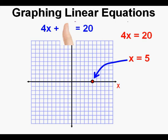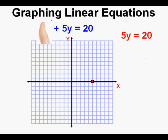Now we find the y-intercept by covering up the x-term, which sets x equal to 0. That gives us 5y equals 20. We solve for the y-intercept by dividing both sides by 5, so our y-intercept is 20 divided by 5, which equals 4. We graph the point along the y-axis at 4.